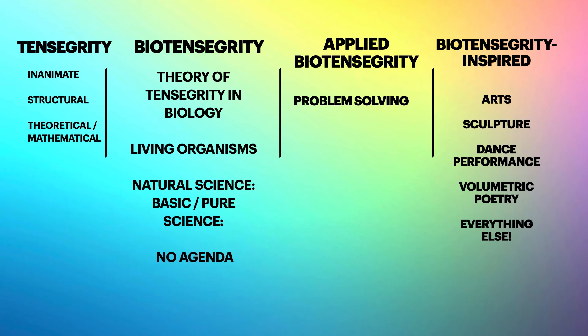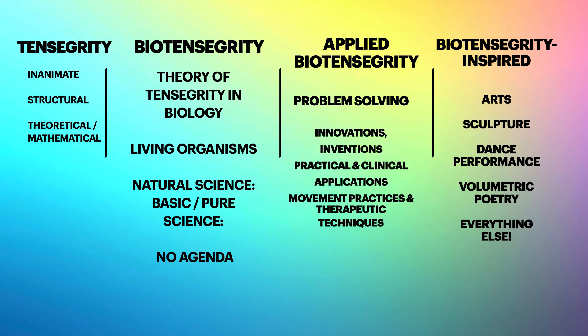So these are our four categories. When we're trying to figure out and talk about the work we're trying to do, these are the categories we use. You can't apply biotensegrity if you don't study biotensegrity as a pure science, and you can't really study biotensegrity without an understanding of tensegrity. These things tend to flow back and forth — we who study this flow between different categories to round out our work and improve what we're doing.